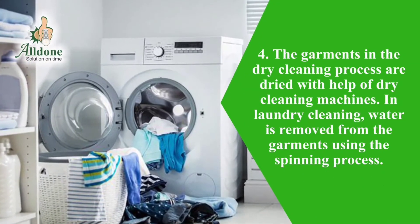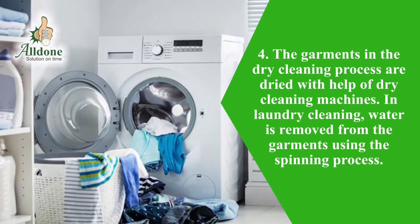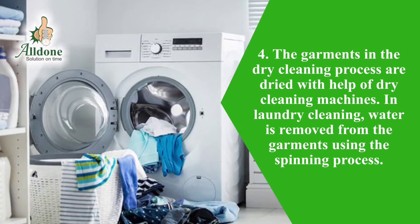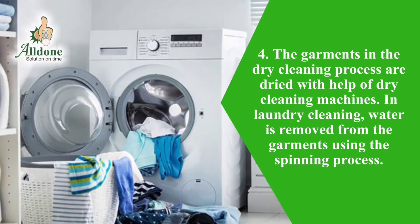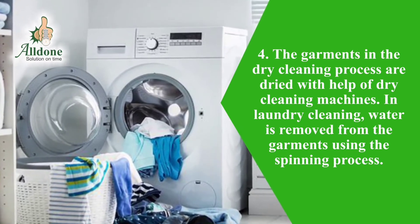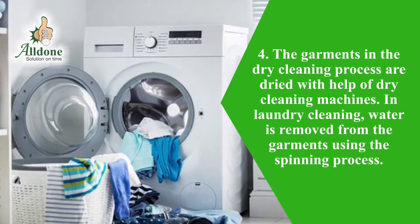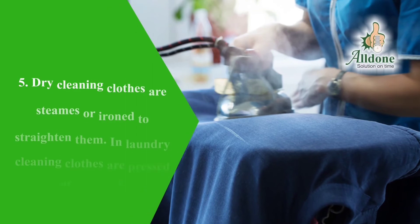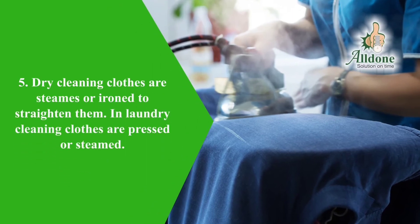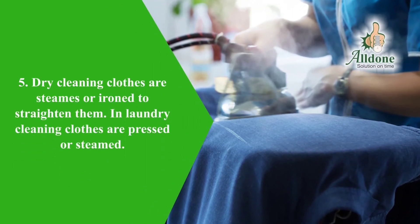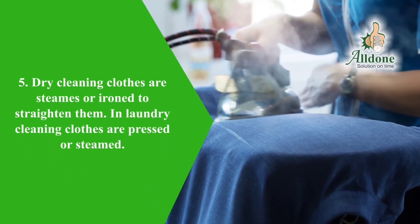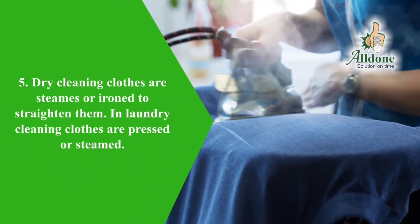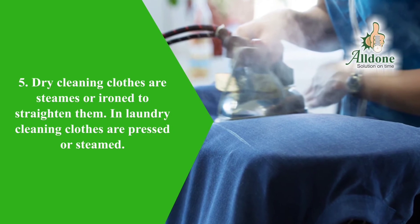The garments in the dry cleaning process are dried with the help of dry cleaning machines. In laundry cleaning, water is removed from the garments using the spinning process. Dry cleaning clothes are then steamered or ironed to straighten them, while in laundry cleaning clothes are pressed or steamed.